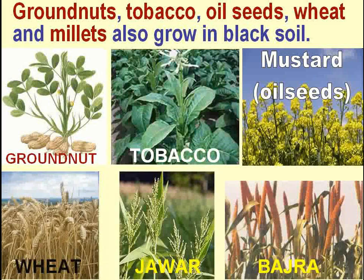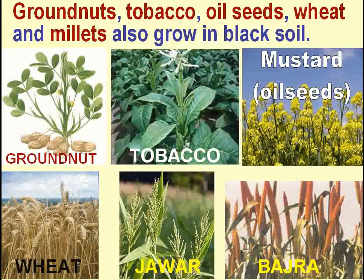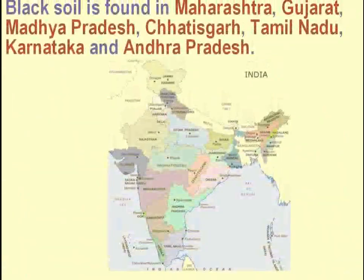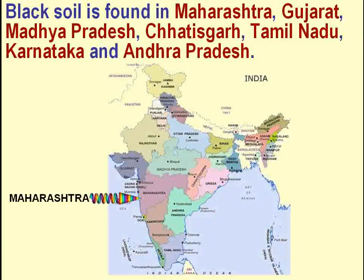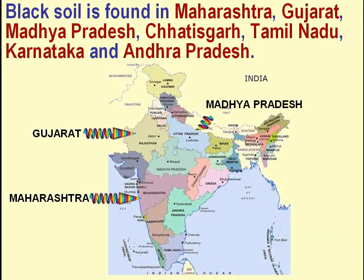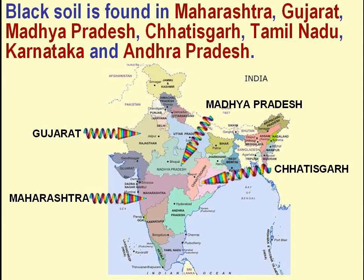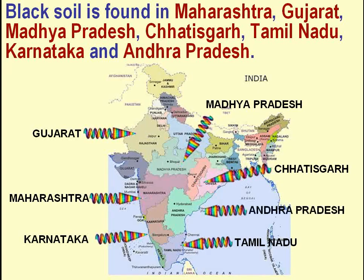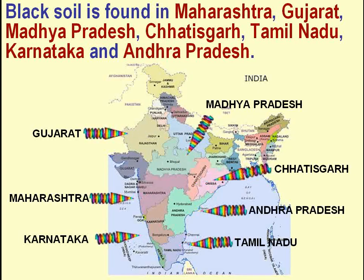Groundnuts, tobacco, oil seeds, wheat and millets also grow in black soil. Black soil is found in Maharashtra, Gujarat, Madhya Pradesh, Chhattisgarh, Tamil Nadu, Karnataka and Andhra Pradesh.